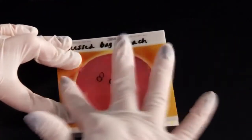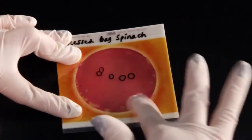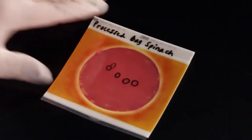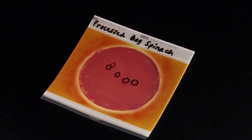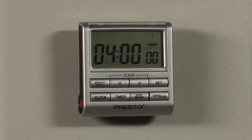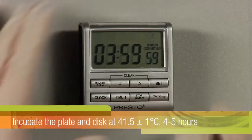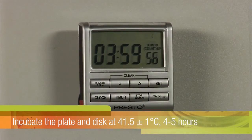Next, gently apply a sweeping motion with even pressure across the top film in order to remove any air bubbles in the inoculation area and assure good contact between the plate's gel surface and the confirmation disc. Incubate the plate and disc at 41.5 plus or minus 1 degree Celsius for 4 to 5 hours.